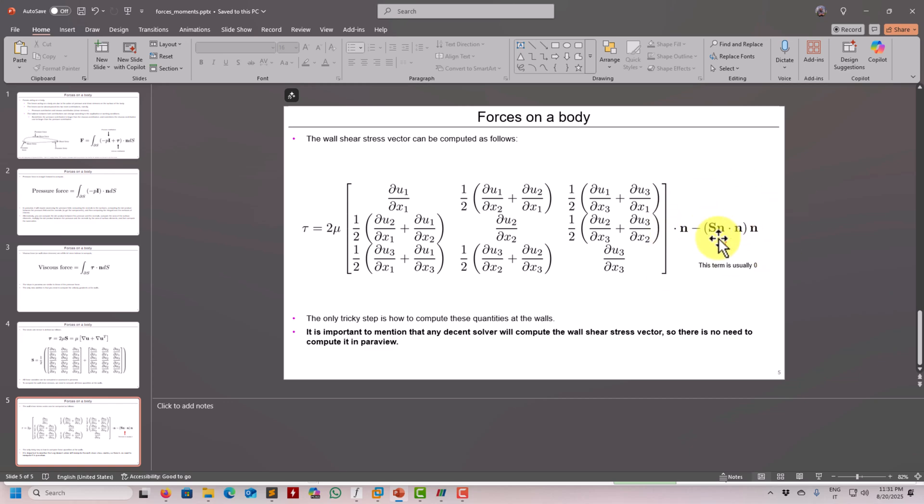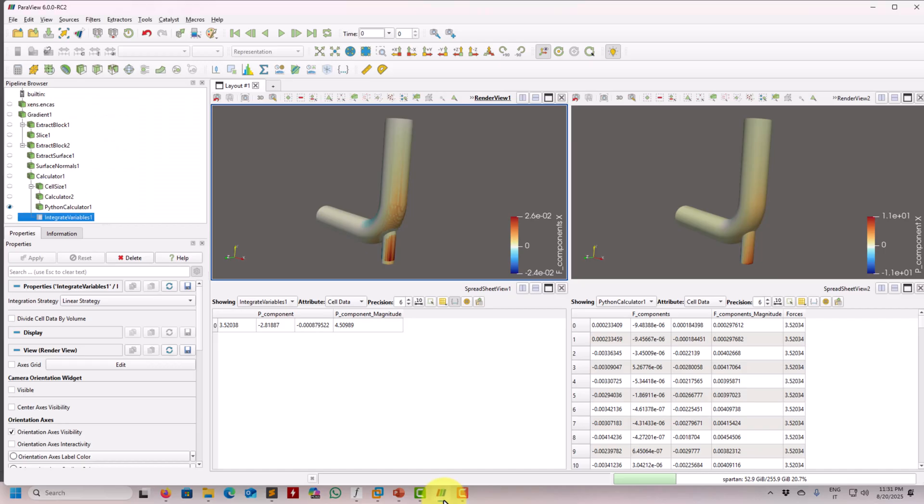That being said, we're ready to do the post-processing. As I mentioned, in the video description you have the link to download everything. I'm going to work in Windows, but it doesn't matter - you can do it in Linux. The cases are ready, no need to run the simulation, but in the tar files we have the Fluent and OpenFOAM setups so you can rerun.